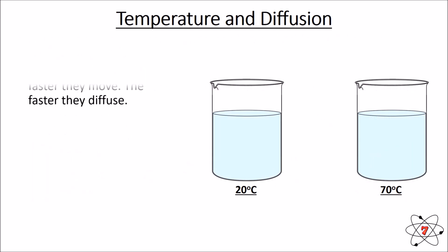The temperature of a substance affects its rate of diffusion. The warmer particles are, the more energy they have. The more energy they have, the faster they move. The faster they move, the faster they diffuse.